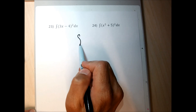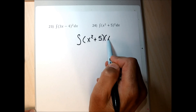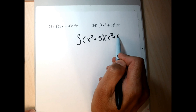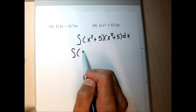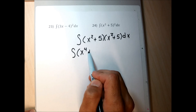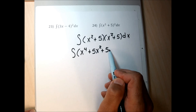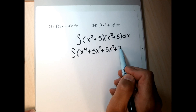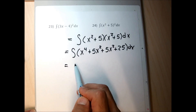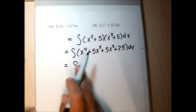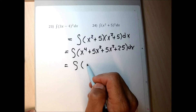Problems 23 and 24 have a square, and a square implies multiplication. If I left it with an exponent of 2, I'd need a reverse chain rule. Instead, I write it without the exponent — two identical parentheses that need to be multiplied — and clear the parentheses by FOILing, then combine like terms. Once I've done that, I add 1 to each exponent and divide by the new exponent. After that I drop the integral symbol.